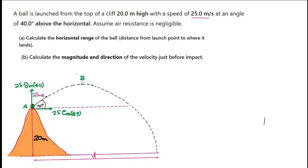Most people write the equations from A up to the maximum height B, then from B down to the point of landing C, then get the total time and use that to find the distance. However, that's probably not the quickest way. The quickest way is to write an equation straight from A to C, so I'm going to show you how that is done.